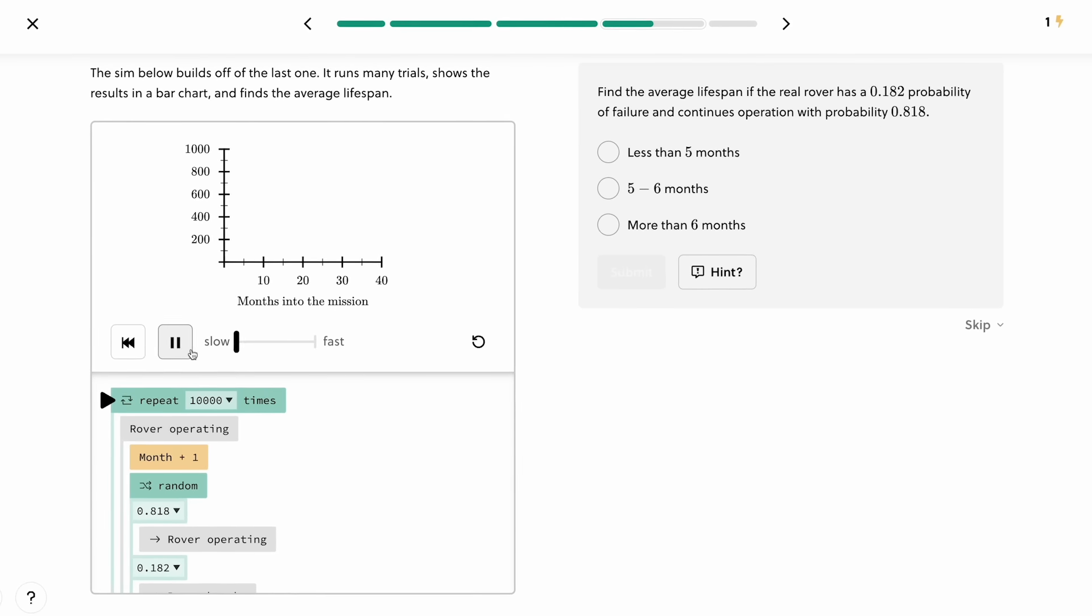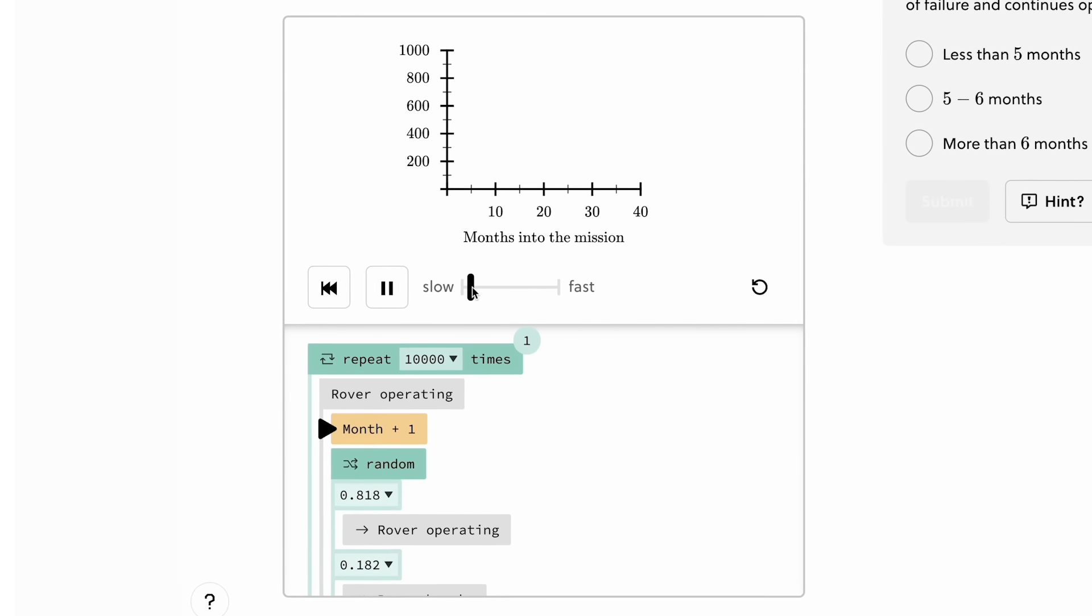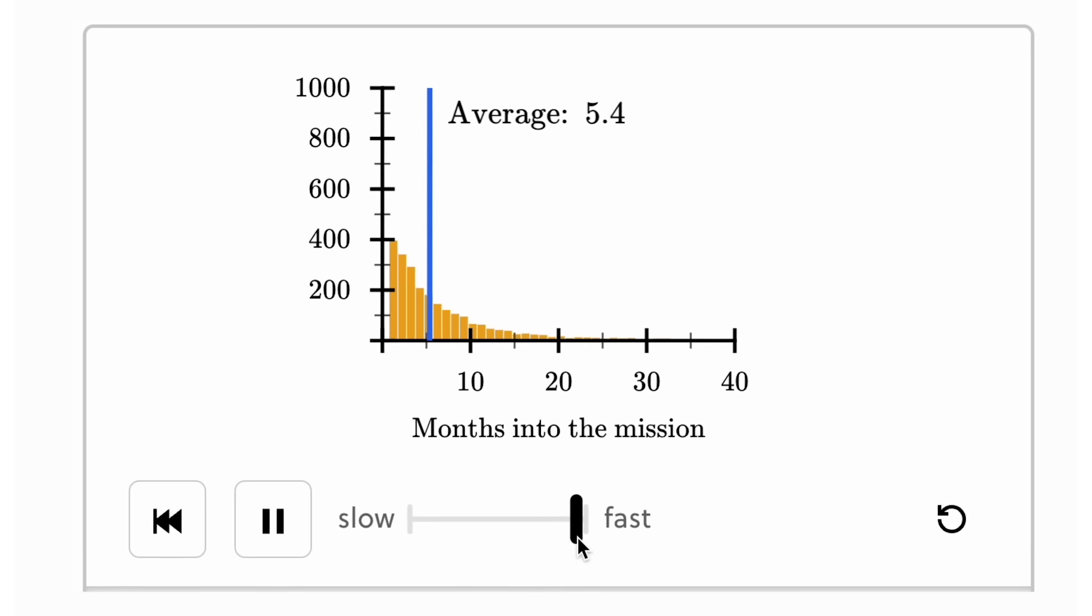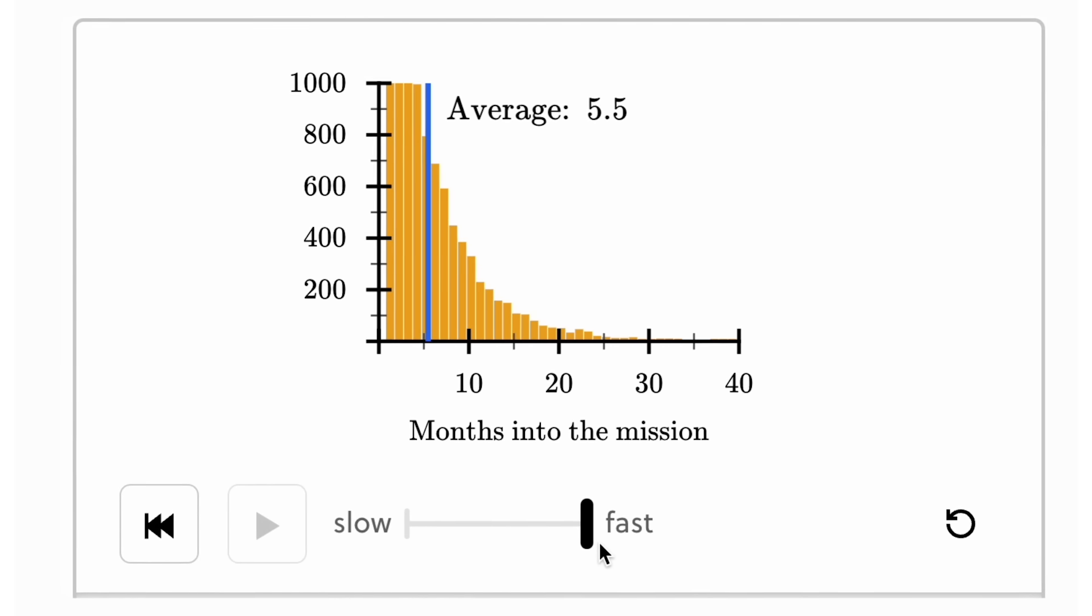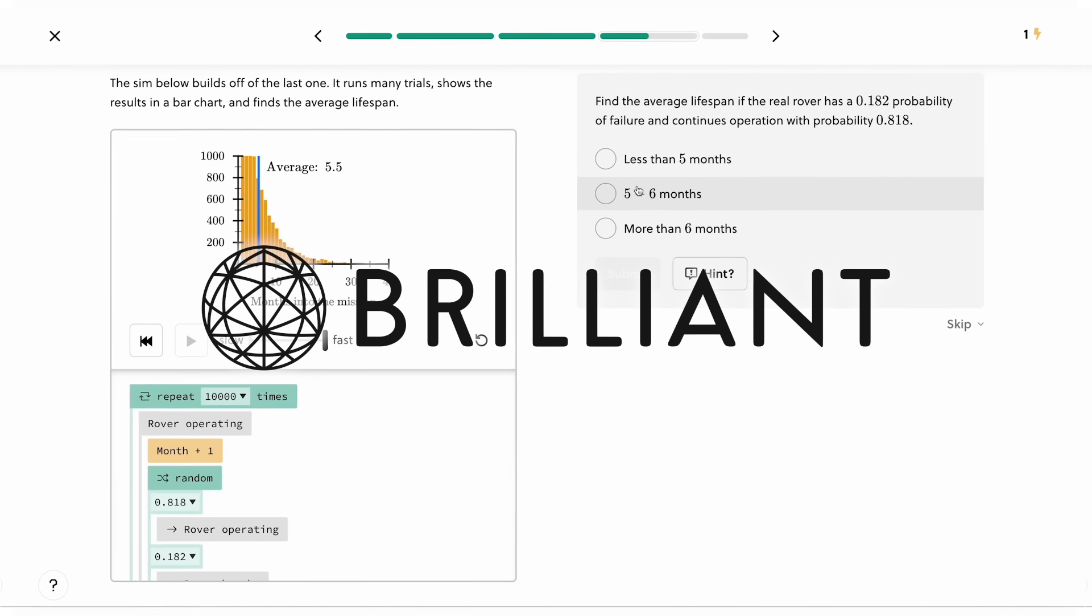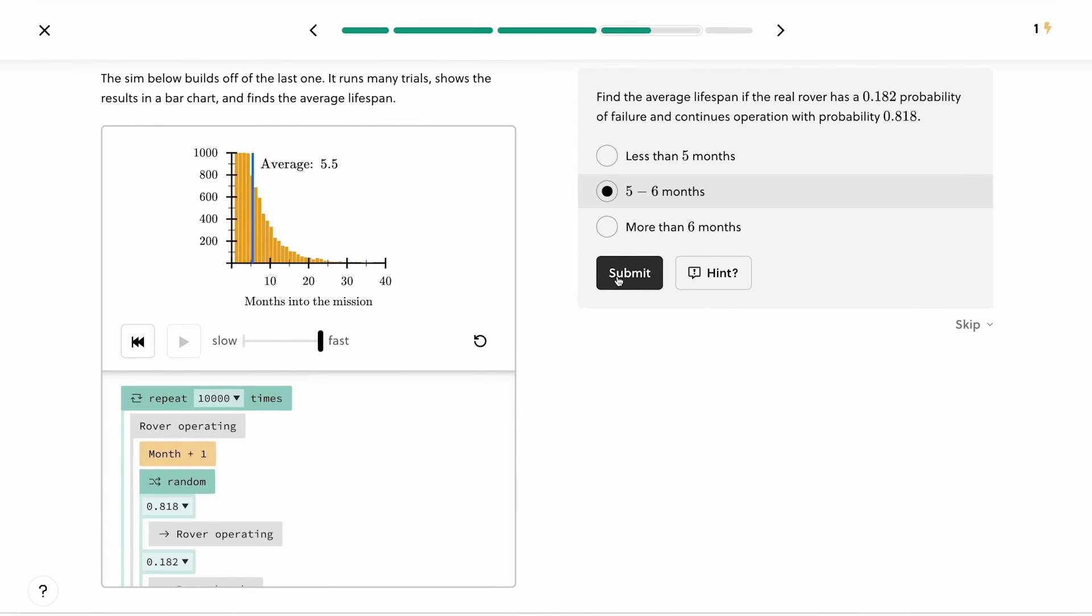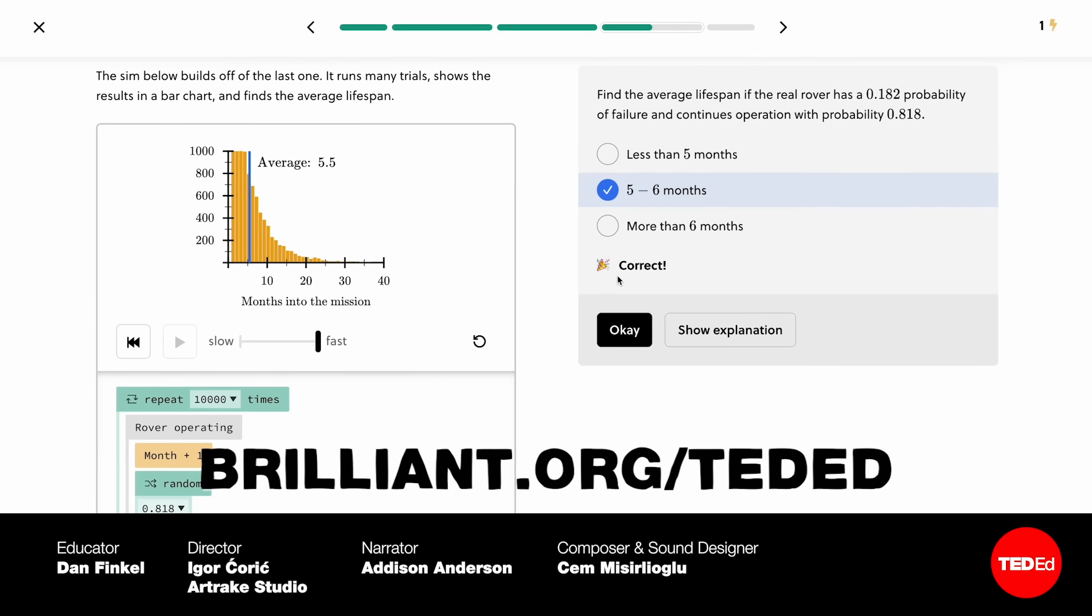Whenever you're rolling the proverbial or literal dice, you're best off understanding probability. Enjoy honing your STEM skills today with Brilliant.org's Intro to Probability course, or another of their thousands of lessons. Visit Brilliant.org slash TedEd for 30 days free and 20% off an annual subscription.